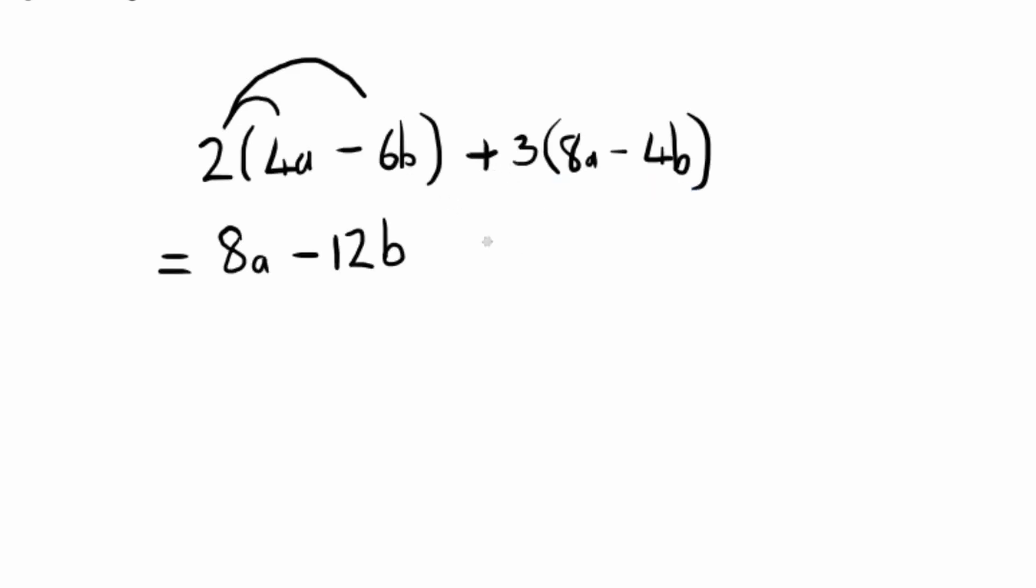We have positive 3 multiplied by 8a, and so positive multiplied by positive is a positive, and 3 times 8a is 24a, and our only variable there is a. So let us then look at this next step: 3 multiplied by negative 4b. Well, that would be a positive times a negative - 3 times 4 is 12, and our only variable is b.